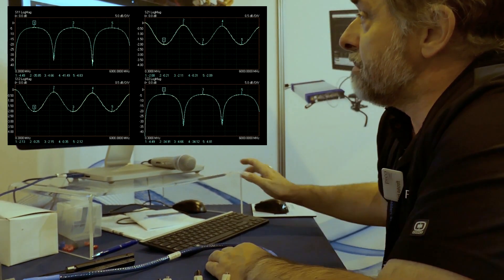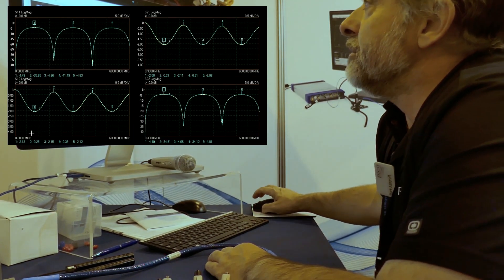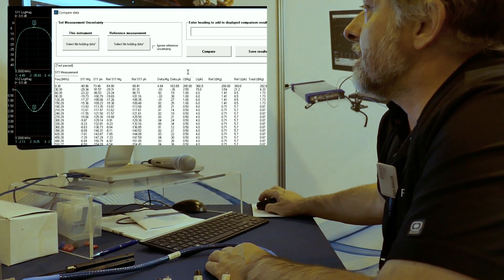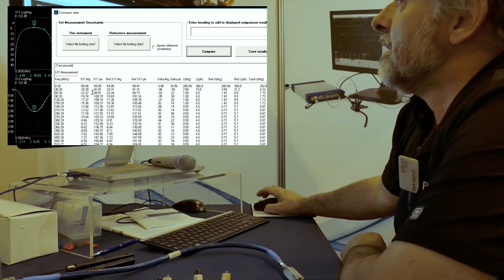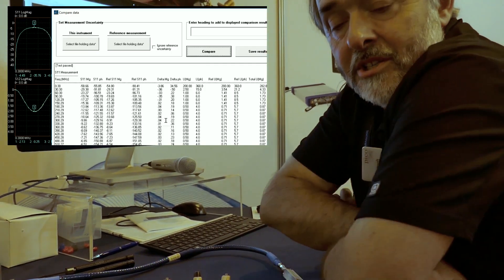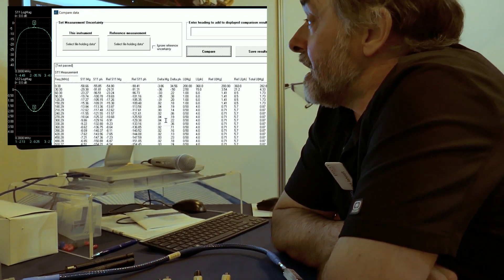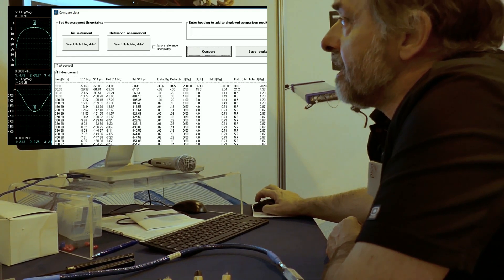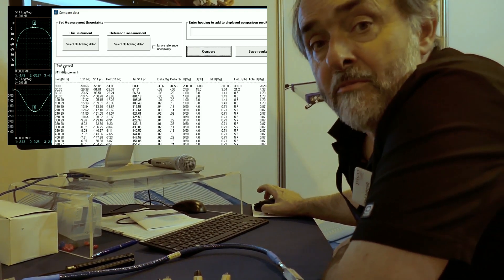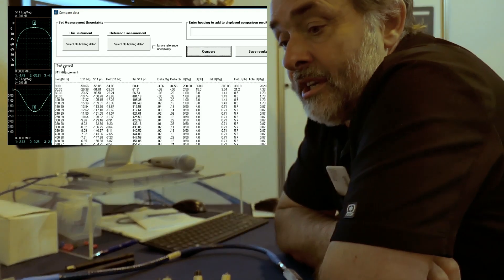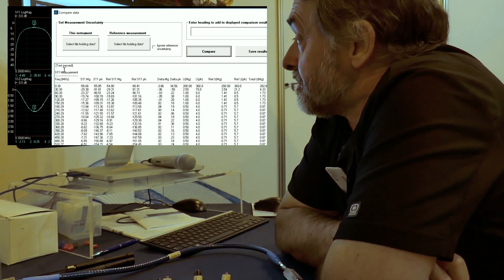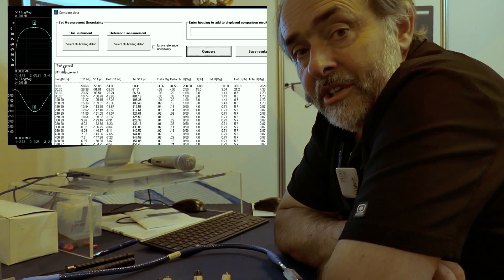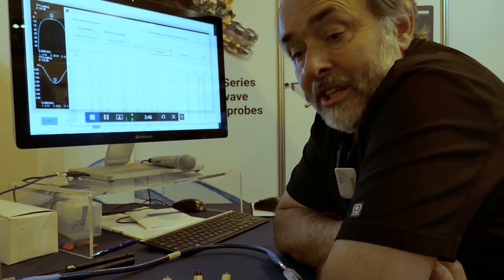That's our live trace. We can compare that if we use the compare data utility and compare. And what that's doing is it's comparing the blue data with the yellow data and it's telling us, as we can see here, test passed. That is comparing the measured data with the traceable data provided with the check standard, and that's telling us that we are within uncertainty with that measurement at the moment.